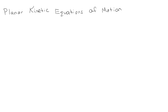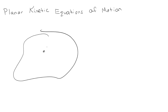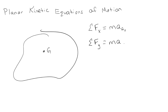We have some kind of a body with a center of mass at G. We've established that the sum of the forces in the X direction equals mass times the acceleration of the center of gravity in the X direction, and the sum of the forces in the Y direction equals mass times the acceleration of the center of gravity in the Y direction. For point particles we didn't have to worry about this, but for rigid bodies we need to specifically indicate we're evaluating at the center of mass.